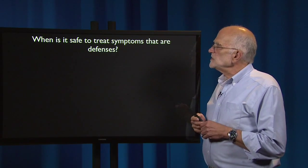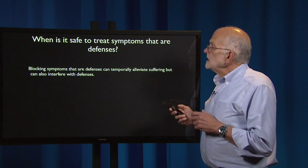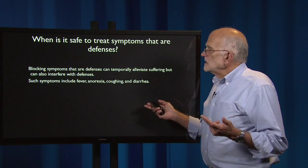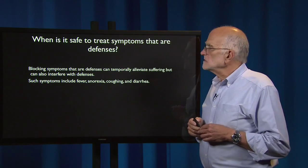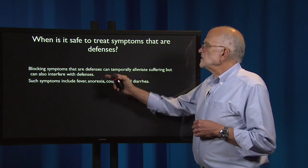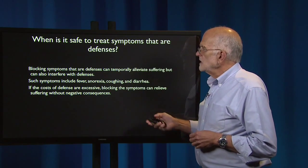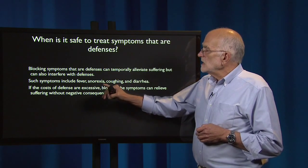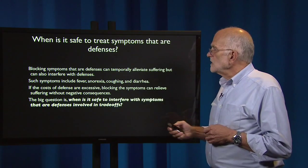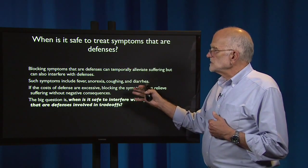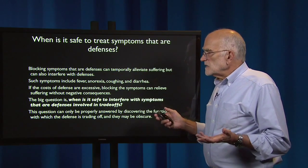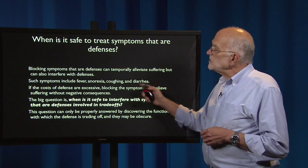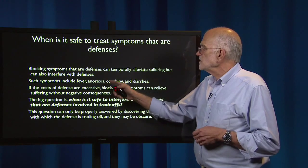When is it safe to treat a symptom that is a defense? If you block a symptom that is a defense, that can temporarily alleviate suffering, but it can also interfere with the defense. Such symptoms include fever, anorexia, coughing, and diarrhea — all reactions that are helping the body handle the infection. If the costs of defense are excessive, then blocking the symptoms can relieve suffering without negative consequences. However, the big question is when it is safe to interfere with symptoms that are defenses involved in trade-offs. That question can only be properly answered by discovering the functions with which the defense is trading off, and they may be obscure. We do not always know the consequences of interfering with fever, anorexia, coughing, and diarrhea.